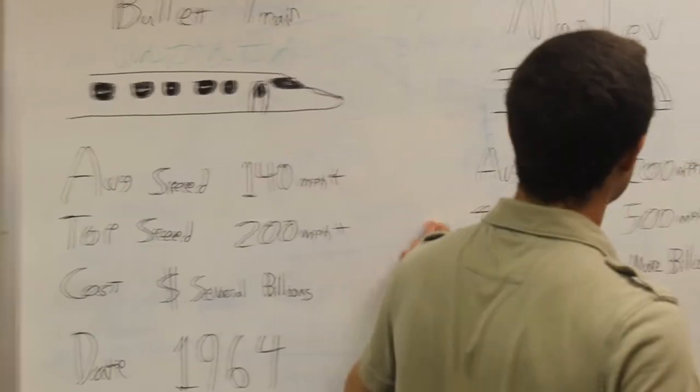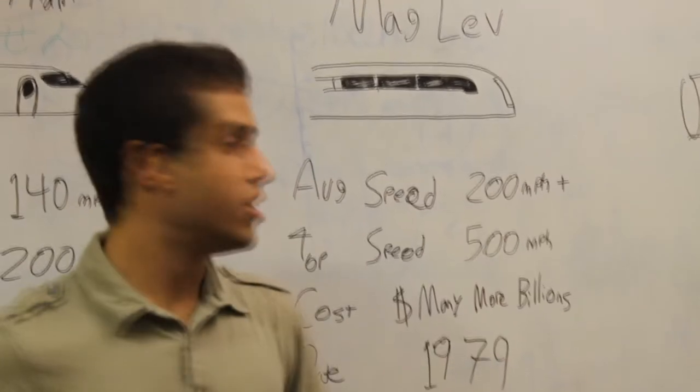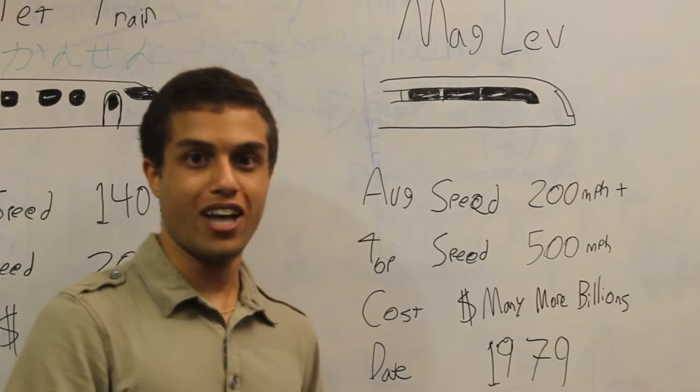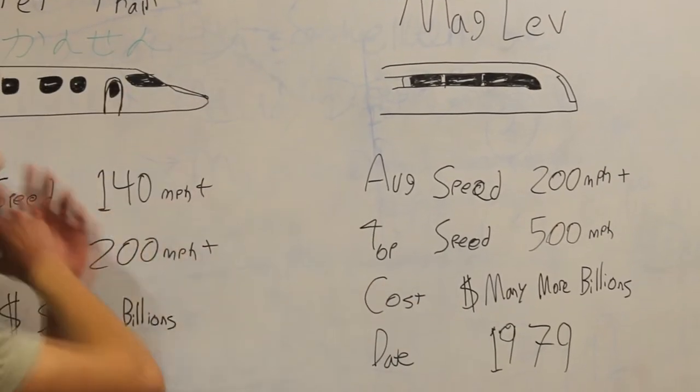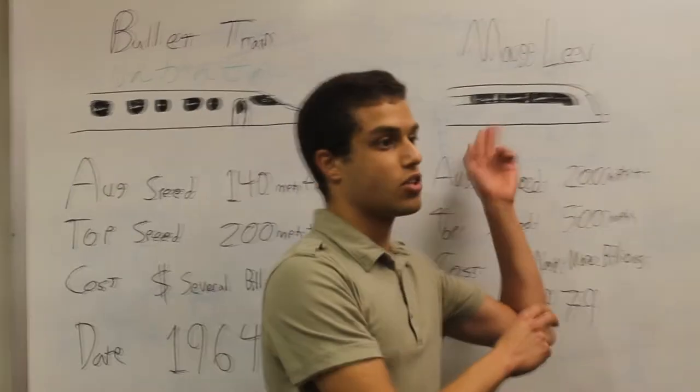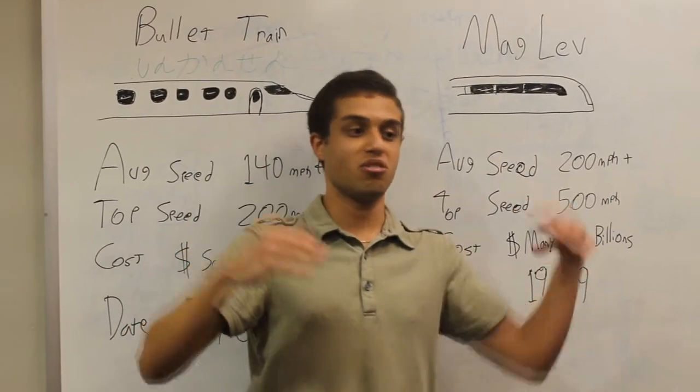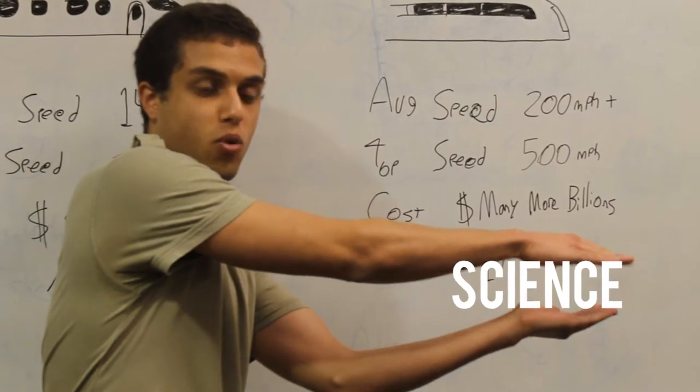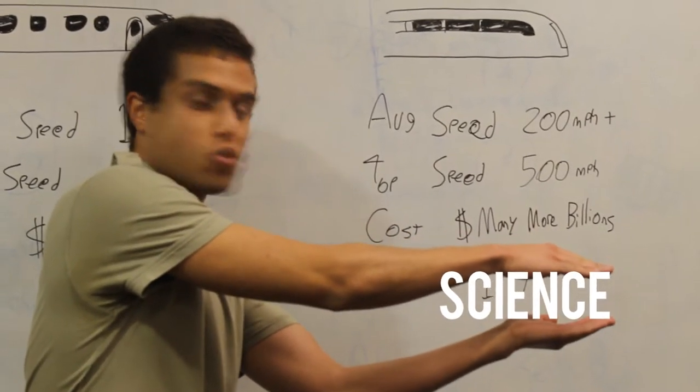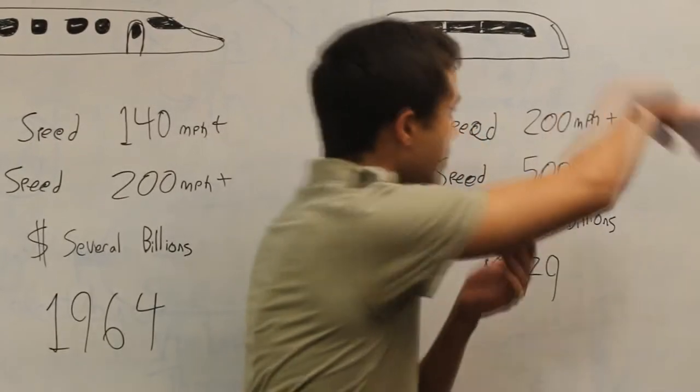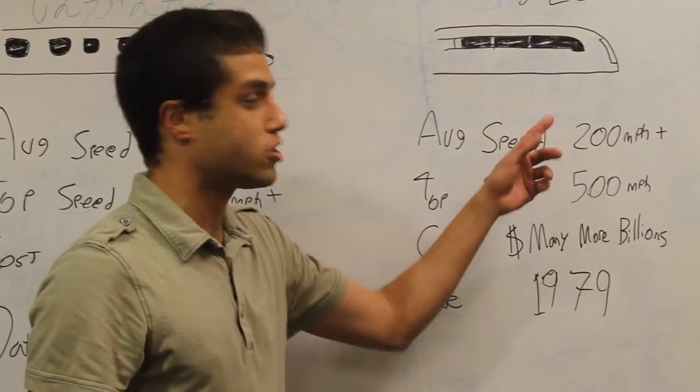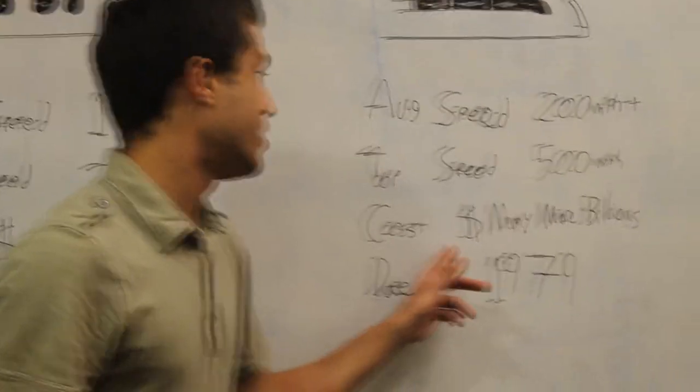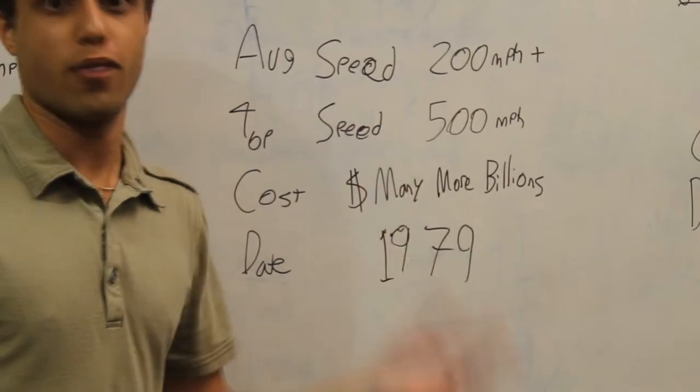Now we go on to the second type, which is the Maglev. The Maglev was introduced in Germany in 1979. These go a lot faster than their electric counterparts. While the electric bullet train runs on rail, the Maglev system actually runs on thin air. These trains are magnetically levitated so that there is no resistance between the rails and the trains. Once electricity flows through them, the train moves forward. They have a higher average speed and top speed. However, given the higher speed, there's more cost, many more billions of dollars.